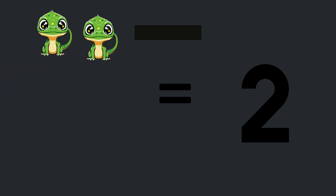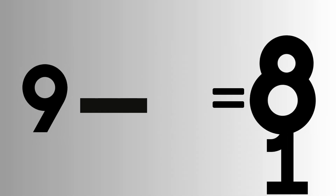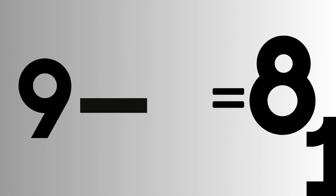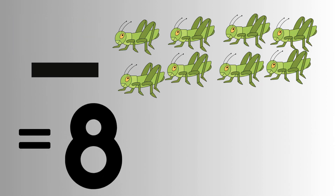Nine take away one equals eight: nine grasshoppers take away one grasshopper equals eight grasshoppers.